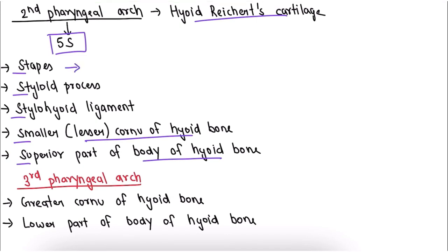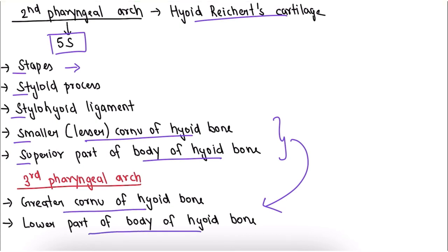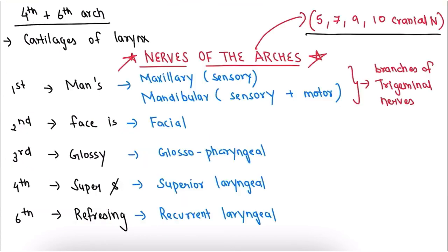Stapes is the middle ear structure derived from the second pharyngeal arch, while malleus and incus are derived from the first pharyngeal arch. The structures derived from the third pharyngeal arch are exactly opposite: greater cornu of hyoid bone and lower part of body of hyoid bone. The structures derived from the fourth and sixth pharyngeal arch are the cartilages of the larynx.